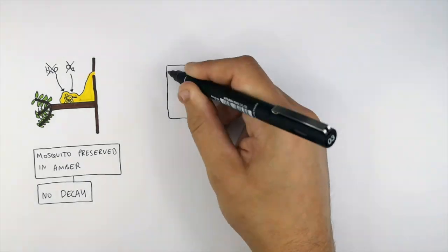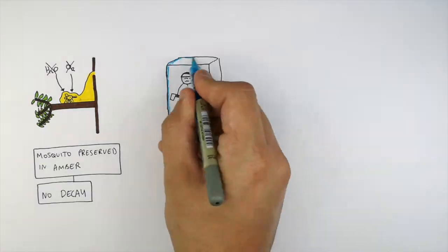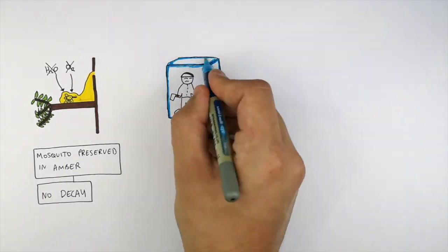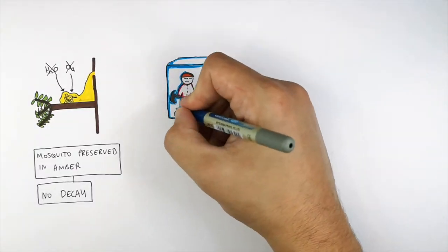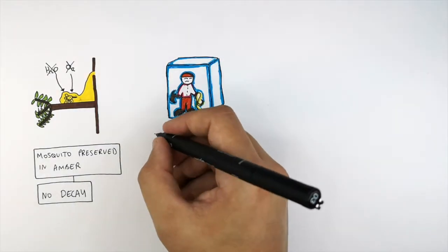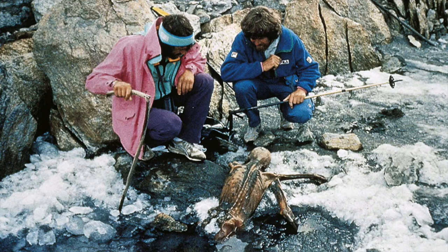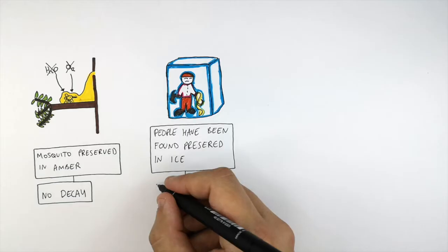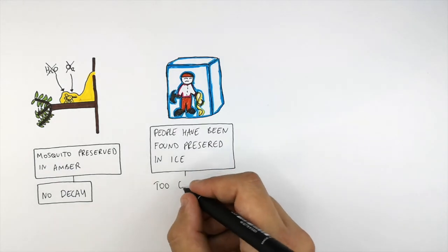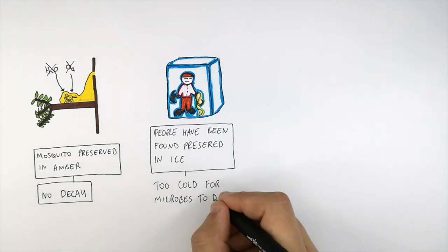This person here went on an expedition up a mountain. Because it's so cold and sub-zero temperatures, their body will be preserved, because the microorganisms will not decay the organic matter. People have been found preserved in ice, as you can see here. This is a preserved fossil of a human that was found in ice, and that is thousands of years old.